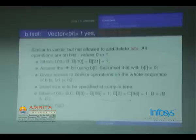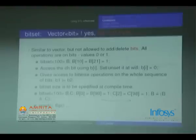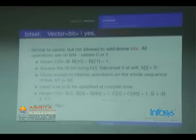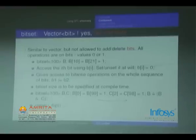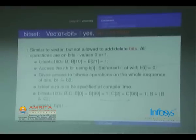Next is bitset. It is similar to a vector of bits. The advantage is you can use it like a normal integer — all bitwise operators apply. Syntax: bitset<size> b. You can assign any element to 0 or 1, and access the i-th bit with b[i], similar to a vector of bits.